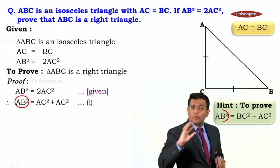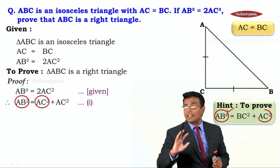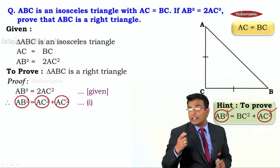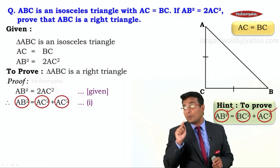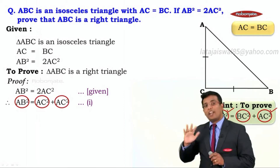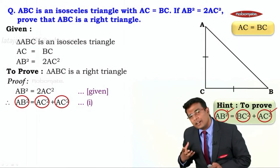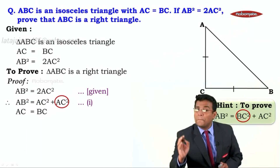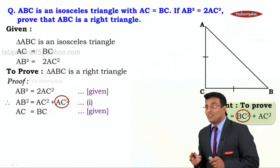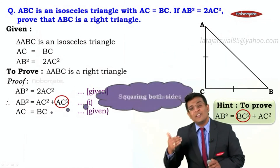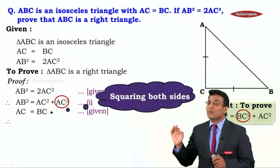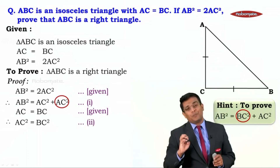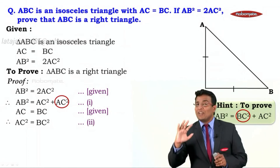Observe carefully. We wanted AB square on the left hand side — we have it. We wanted AC square on the right hand side — we have that too. But we also need BC square, and we don't have that yet. How do we get it? We use the given information that AC is equal to BC. Squaring both sides gives us AC square is equal to BC square. Let us call this result number two.